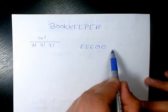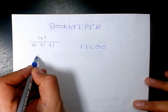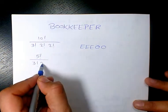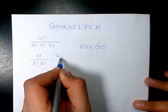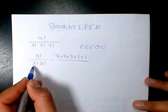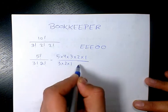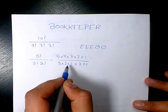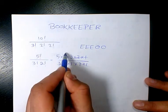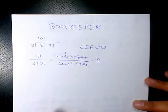So E is repeating 3 times and O is repeating 2 times, giving us 5 vowels total. It's going to be 5 factorial divided by 3 factorial times 2 factorial, which is 5 times 4 times 3 times 2 times 1, divided by 3 times 2 times 1 times 2 times 1. These cancel out, leaving 5 times 2, which equals 10.